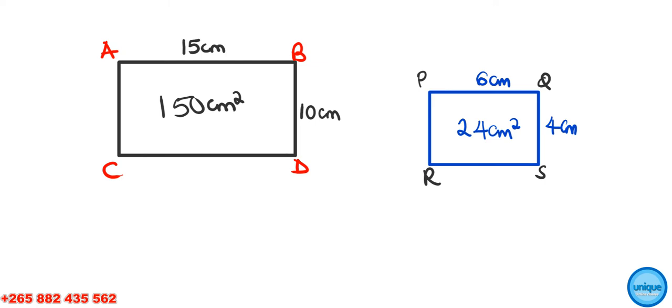The question gives us the length of rectangle ABCD and the length of smaller rectangle PQRS. Given that the area of the bigger rectangle is 150 cm², we should find the area of the smaller rectangle.